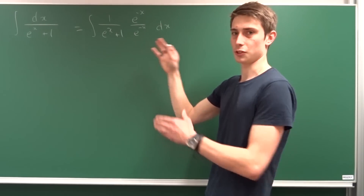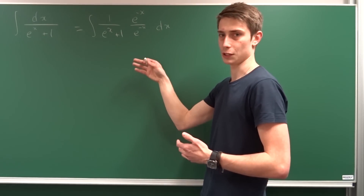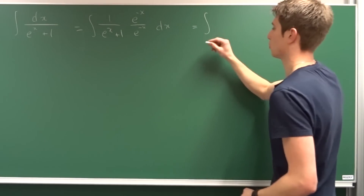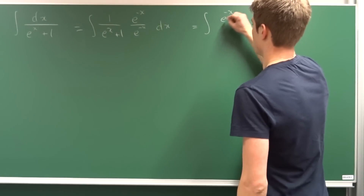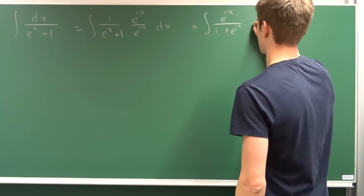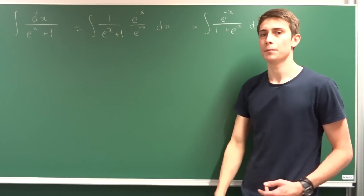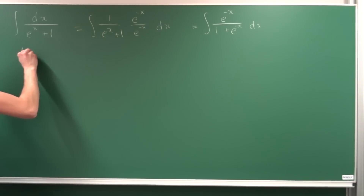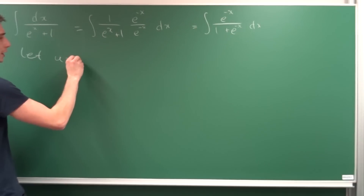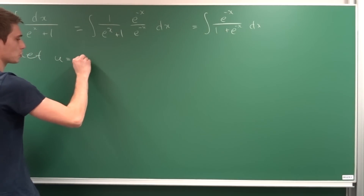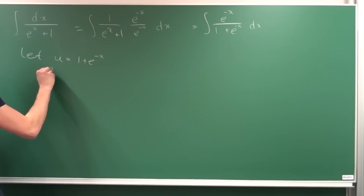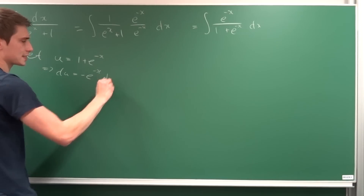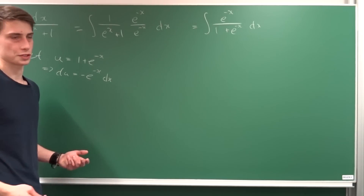We distribute e to the minus x into the numerator and denominator, and what we end up with is the integral of e to the minus x over 1 plus e to the minus x, times dx. Now we introduce a substitution: let u equal the denominator, 1 plus e to the minus x. Then du equals minus e to the minus x times dx.